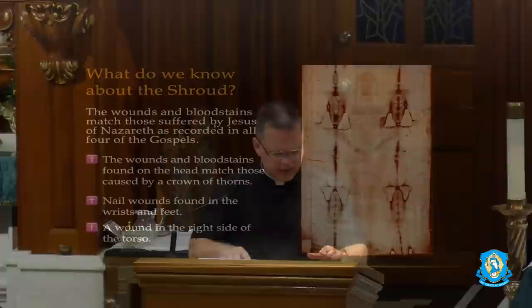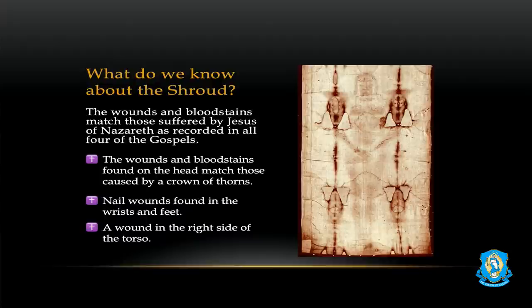The wounds match those suffered by Jesus in all four Gospels. The wounds and bloodstains found on the head match those caused by a crown of thorns. Nail wounds are found in the wrists and the feet — and I know this is an ongoing debate of whether Christ was nailed through the hand or in the wrist. It is not dogmatic, it doesn't change the teaching of our faith, it's tradition with a small T. But I look at it on the shroud and I see the wounds on the wrists, and science does support that the body would have stayed on the cross if nailed only through the wrists. Then we see a wound in the right side of the torso.